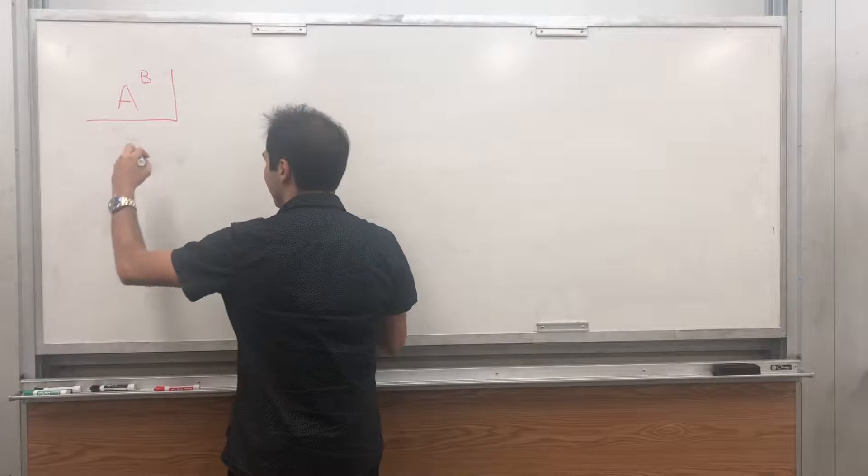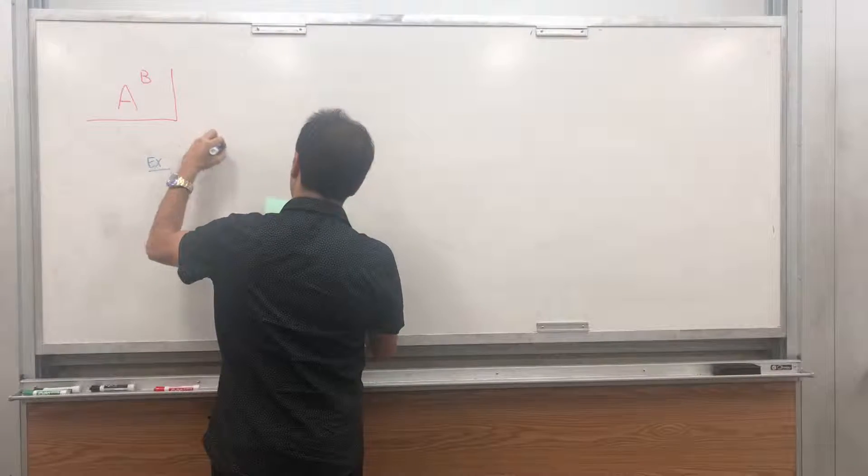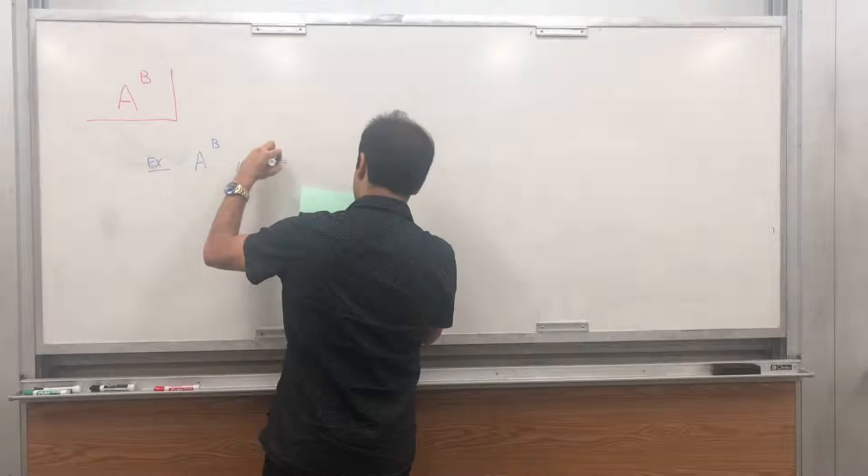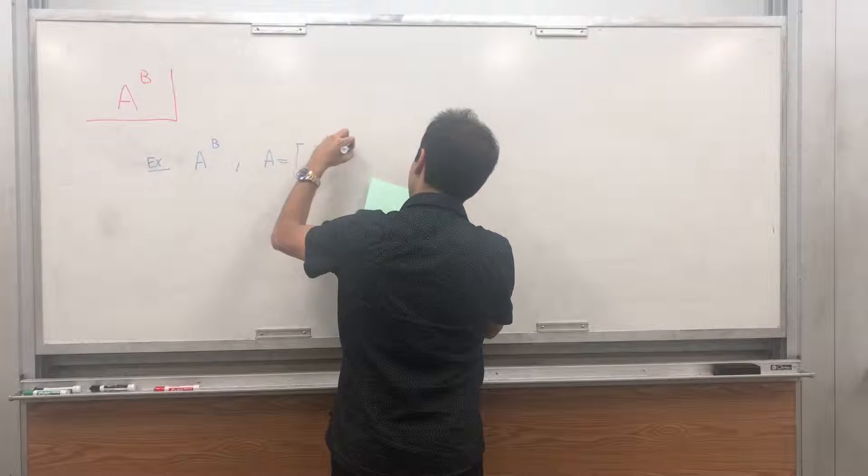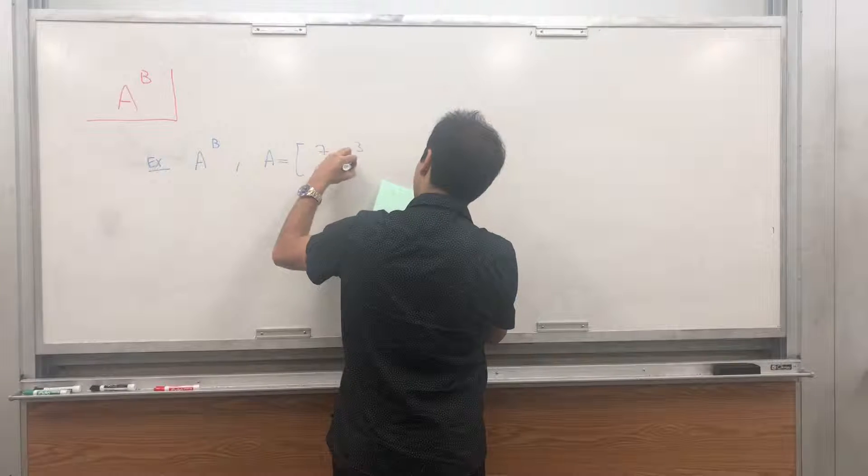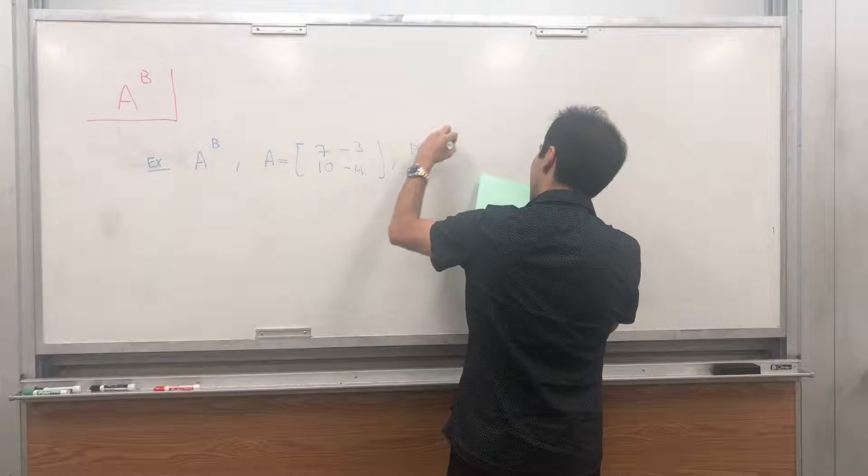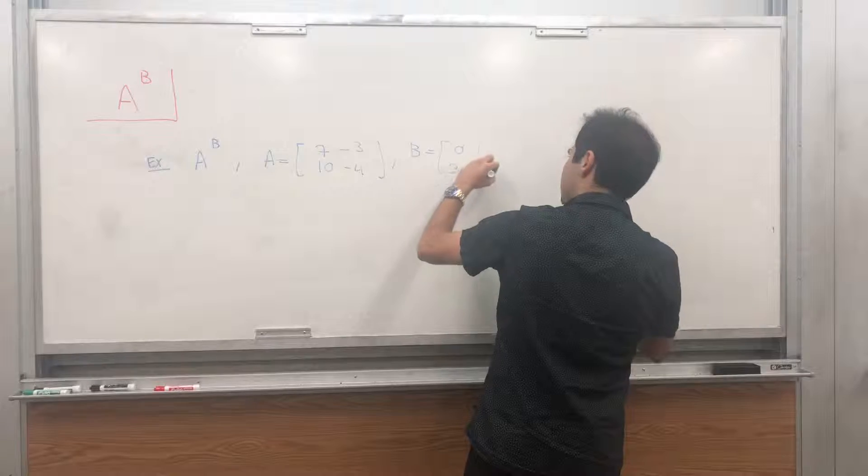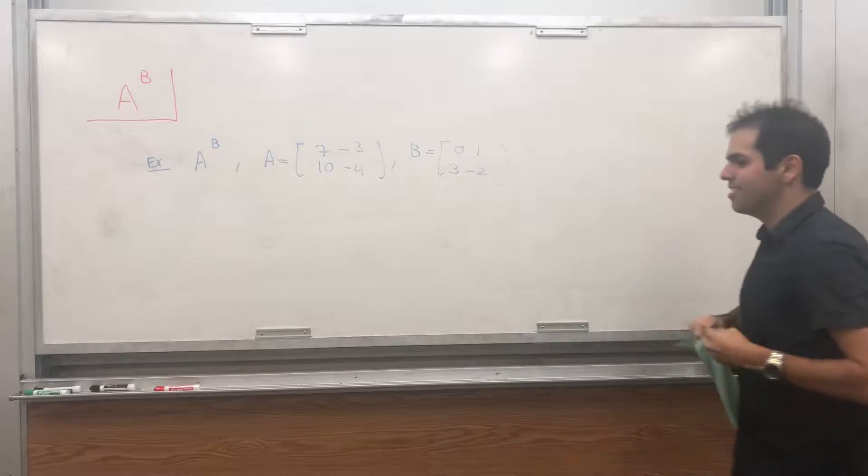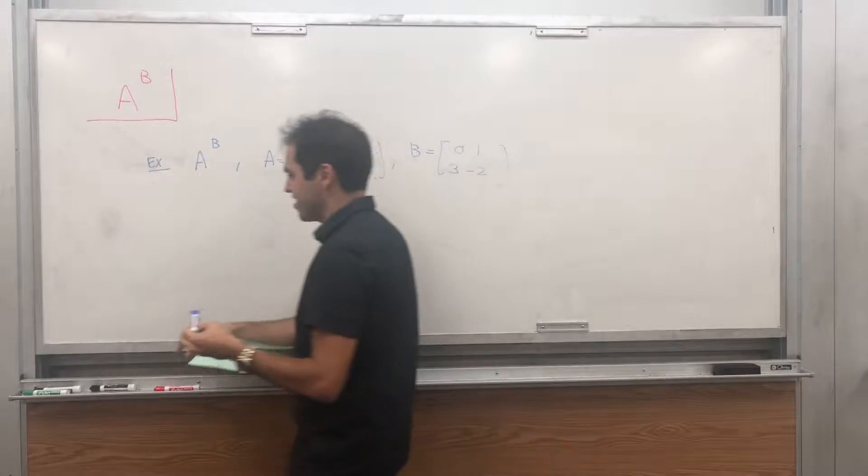So, for example, let's calculate the following. Let's calculate A to the B where A is 7, minus 3, 10, and minus 4, and B is 0, 1, 3, minus 2. And so the question is, how would you even evaluate such a thing?